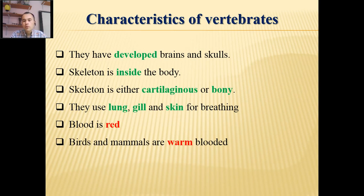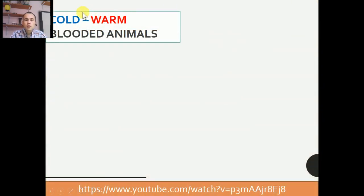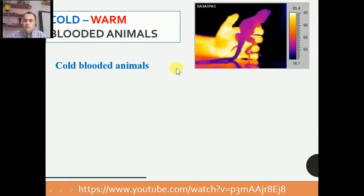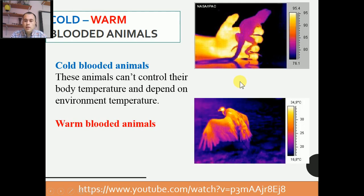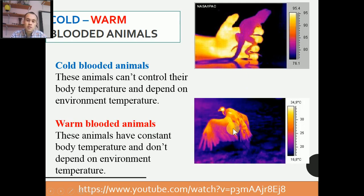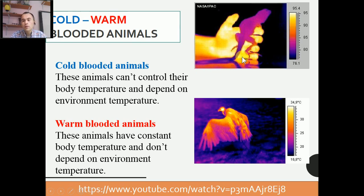Birds and mammals are warm-blooded. Amphibians, reptiles, and fish are cold-blooded. Cold-blooded animals have a body temperature that depends on the outside environment. Warm-blooded animals have a constant body temperature, independent of the environment. For example, a bird's body temperature stays constant even when it is cold outside, just like humans. But a snake or lizard becomes cold if outside is cold, and warm if outside is warm.